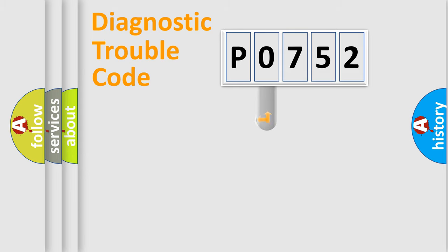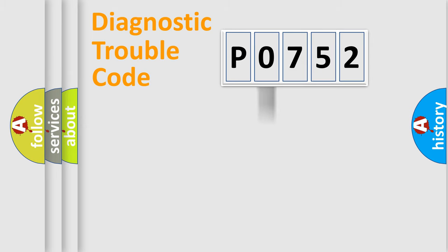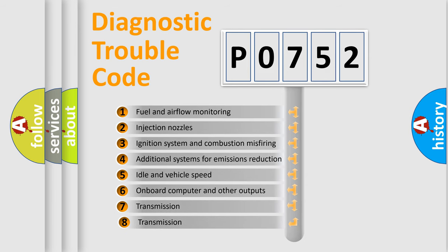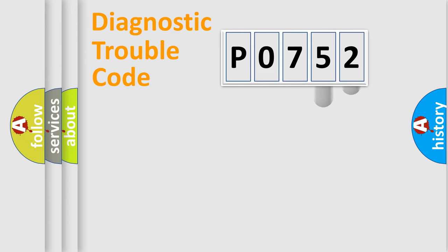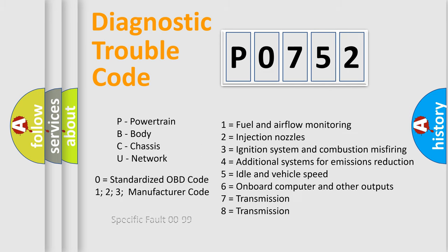This distribution is defined in the first character of the code. If the second character is expressed as zero, it is a standardized error. In the case of numbers 1, 2, or 3, it is a more manufacturer-specific expression of a car-specific error. The third character specifies a subset of errors, and this distribution is valid only for the standardized DTC code. Only the last two characters define the specific fault of the group, and this division is valid only if the second character code is expressed by the number zero.